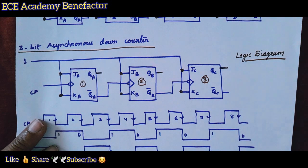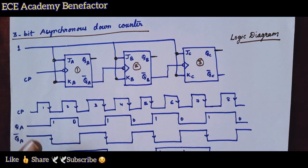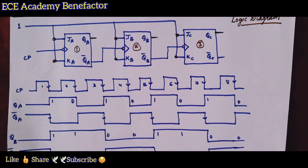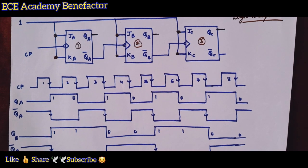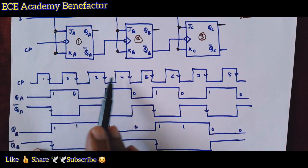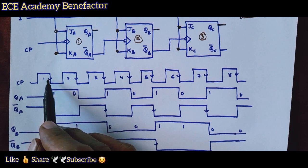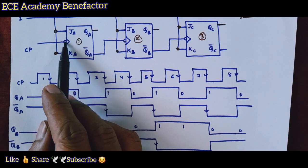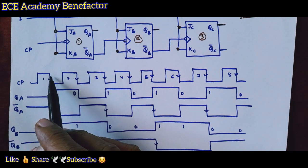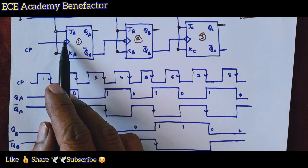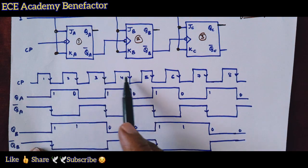Now let us see how to draw the timing diagram of the 3-bit asynchronous counter. 2 to the power 3 is 8, so for convenience I have drawn 8 clock pulses: 1, 2, 3, 4, 5, 6, 7, 8. The leading edge and trailing edge of the clock are shown. There is a bubble before the clock input, meaning it is negative-edge triggered — the flip-flop state changes at the falling edge of the clock pulse.